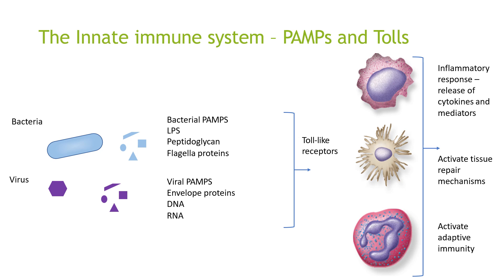Here is a diagram showing what Toll-like receptors do and the different types of features. For bacteria, the bacterial PAMPs include LPS, peptidoglycan and flagellar proteins. For viruses, the viral PAMPs include envelope proteins, DNA and RNA. Toll-like receptors can activate tissue repair mechanisms, activate adaptive immunity, and trigger an inflammatory response or release of cytokine mediators.